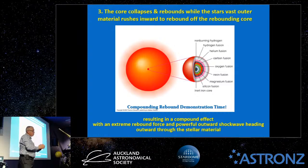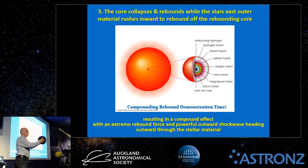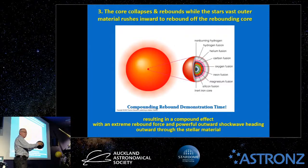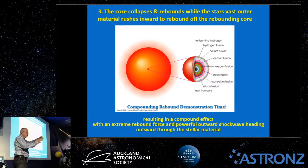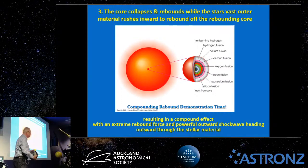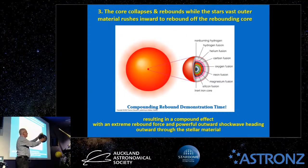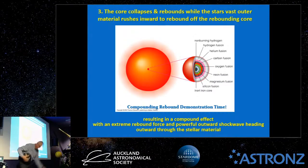Let me demonstrate with a basketball representing the rebounding collapsed core and a tennis ball representing the infalling stellar material. Dropped alone, each ball only bounces to a modest height. But when the tennis ball is stacked on top of the basketball and both are dropped together, the tennis ball rebounds off something that is itself already rebounding — and the result is a dramatic amplification: the tennis ball ricochets with far, far more energy.